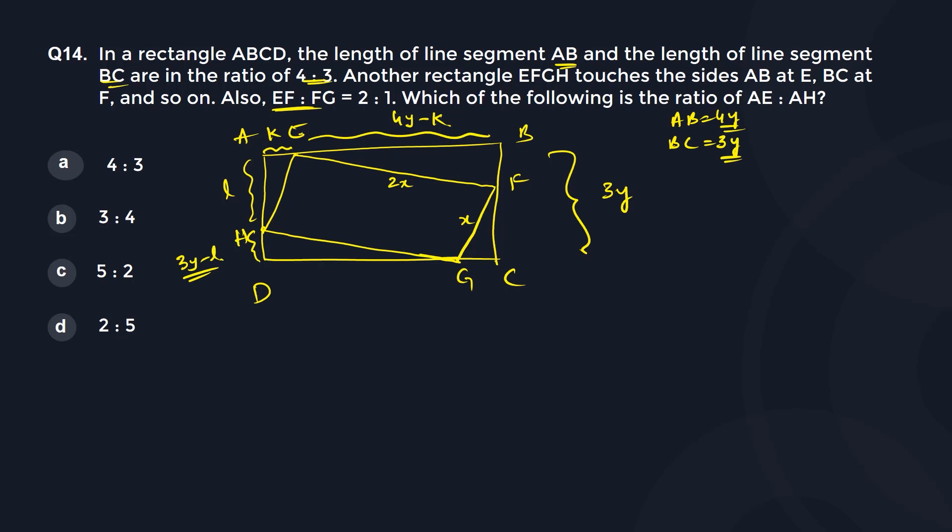Now the moment you observe this, if you start writing equations, many of you would have done this. Looking at this small triangle over here, you would have said it is a right angle triangle, so k square plus L square equal to this hypotenuse x square. And you can also look at this bigger triangle and write one more equation. But if you do that, it becomes very lengthy. The smart way to solve this question is to use similarities of triangles.